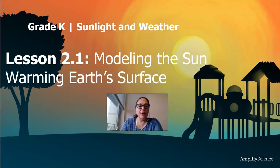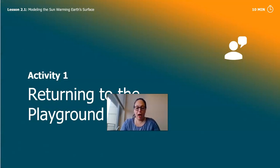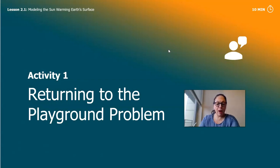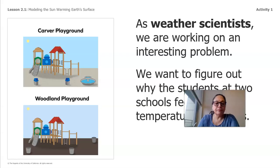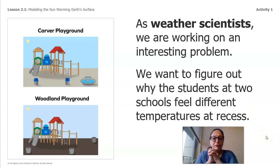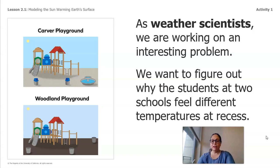In this lesson, we're going to be returning to our playground problem. Remember in chapter one, we talked about the playground problem — it was about two principals that sent a letter for us to try to solve the problem. We had two playgrounds in the same area: the first is called Carver playground and the second was called Woodland playground. As scientists, we want to figure out why the students at the two schools feel different temperatures at recess.